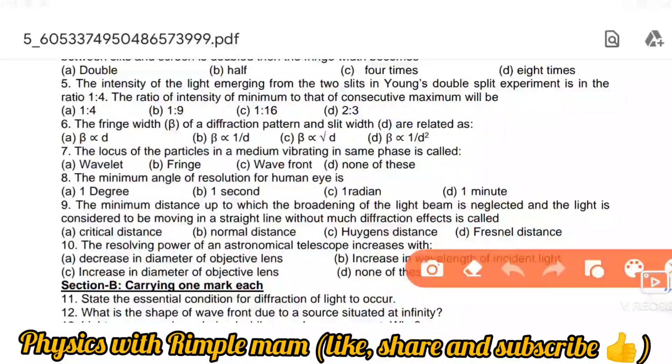Next: The fringe width beta of a diffraction pattern and slit d have the relation beta equals lambda D over d. So beta is directly proportional to 1 over d.